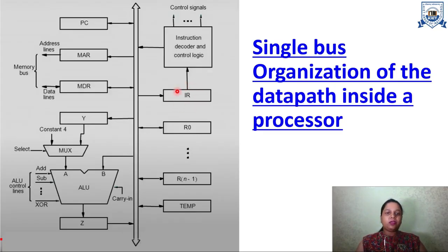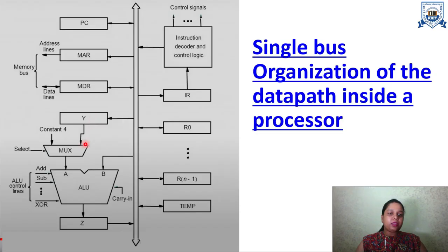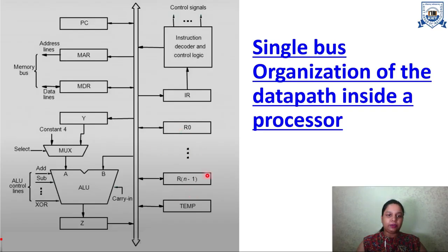With the help of control logic and decoders we can decode this instruction and then execute it on the bus. The general purpose registers R1, R2, and more can provide inputs to the MUX. The MUX feeds one input to the ALU, and a second input can also be given. The ALU performs the operation on its two inputs, and the result is stored in a temporary register, then travels back through the bus to be stored in whatever destination register is required. This is how single bus organization of the data path inside a processor works.